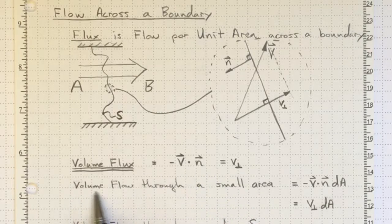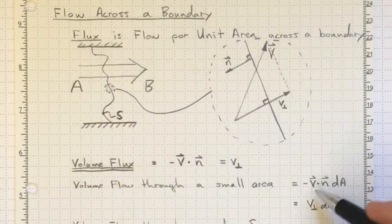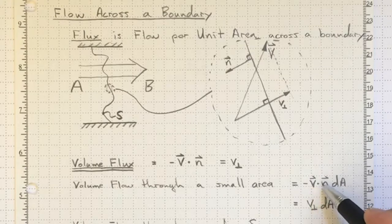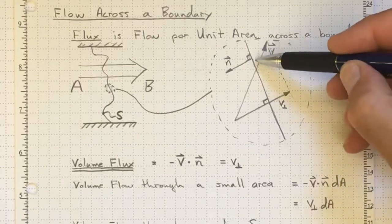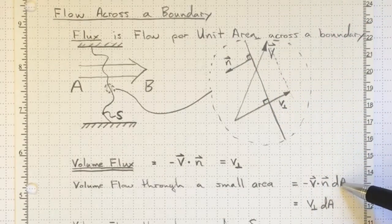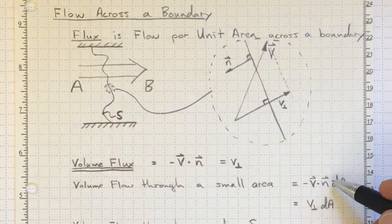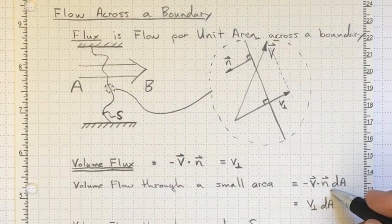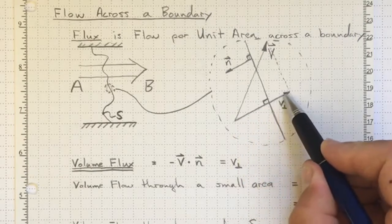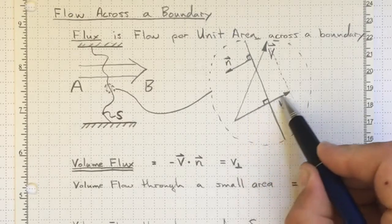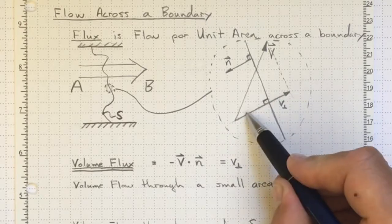So the volume flow through a small area of surface, this little region here, will be the volume flux times the magnitude of that tiny area, dA. And we would need to integrate that if we wanted the total volume flow across that surface. And that dot product is just that perpendicular velocity. What we're really interested in is how much velocity do we have that's going directly across the surface, because that's what carries stuff from one side to the other.